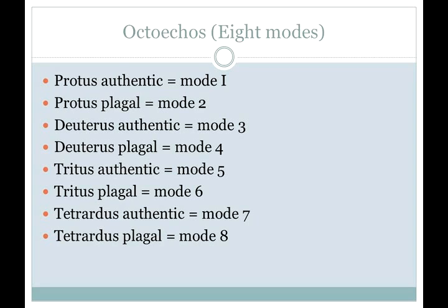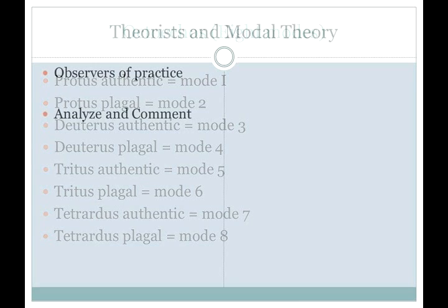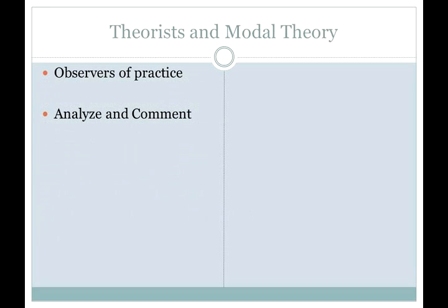Revisiting the question of why the theorists would want to develop such a system, we think there may have been a second reason at play — one more than just musical evolution. Aside from the reasonable explanation that it's the business of theorists to comment on practice, we also think that the system may have developed because of the need musicians had to help them memorize — which is the way all music was learned at the time — all the new repertoire. Let's take a look at just a few bits of evidence to support this theory.